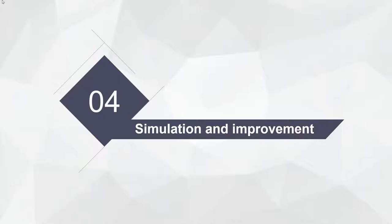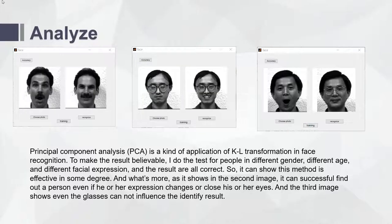The fourth part is simulation and improvement. Principal component analysis (PCA) is a kind of application of KL transformation in face recognition. To validate the results, I tested the method on people of different genders, ages, and facial expressions, and all results were correct, showing this method is effective. The system can successfully identify a person even if their expression changed or they closed their eyes. The third image shows that even glasses cannot influence the recognition results.